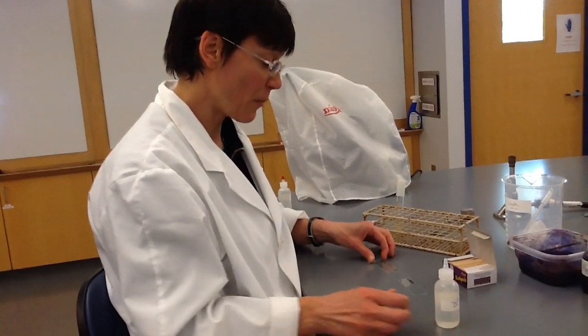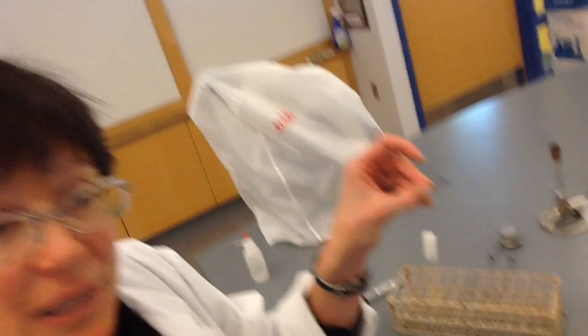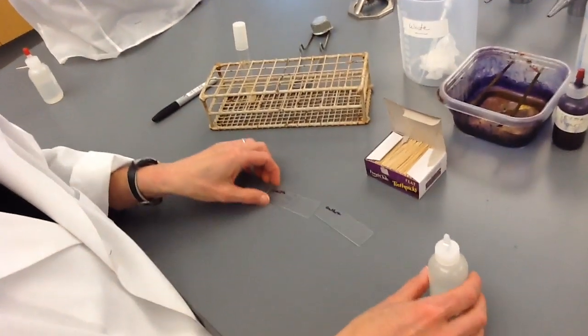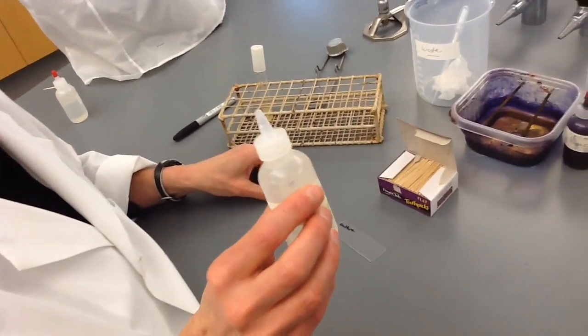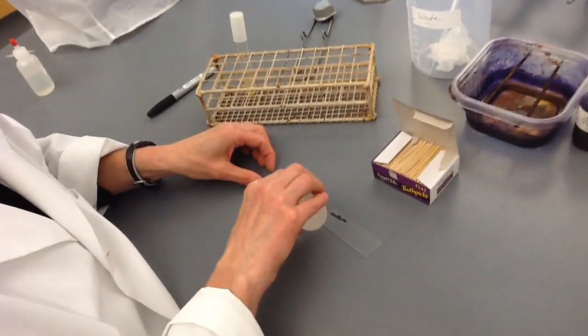First I'm going to show you how to collect the sample from your mouth for some mouth cell microscopy. You start by labeling a glass slide and then you put a drop of water on the glass slide.